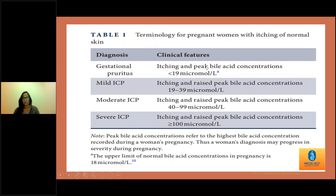Gestational pruritus means itching with a peak bile acid concentration less than 19 micromoles per litre. That is not obstetric cholestasis, because the upper limit of normal bile acid concentration in pregnancy is 18 micromoles per litre. Mild intraoperative cholestasis is a peak bile acid of 19 to 39, moderate is 40 to 99, and severe is more than or equal to 100 micromoles per litre.